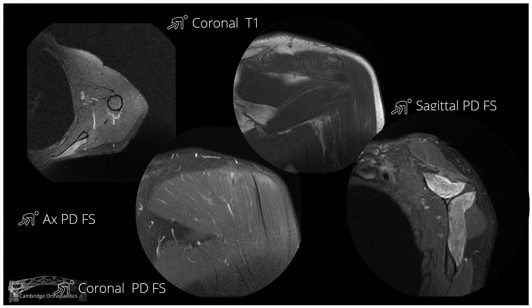Did you see the increased signal on the water images? The proton density fat-saturated images, the T2 images — the edema within supraspinatus and infraspinatus, suggesting acute denervation of supraspinatus and infraspinatus; in other words, an acute injury to the suprascapular nerve. Did you see the anatomy was normal on the coronal T1s with no cuff tears? Acute denervation of supraspinatus and infraspinatus due to a suprascapular nerve injury.